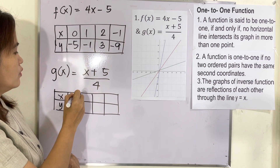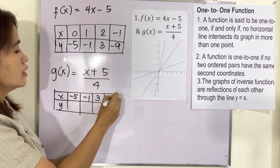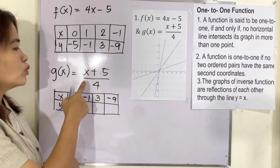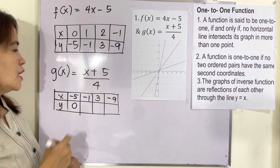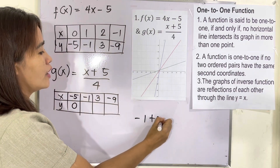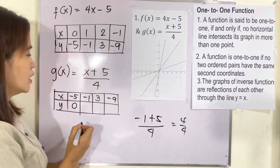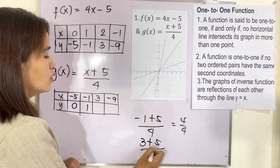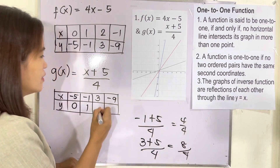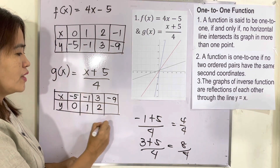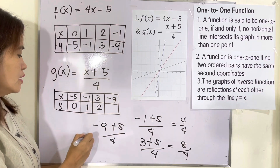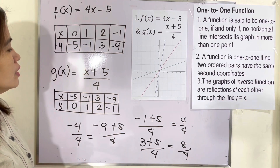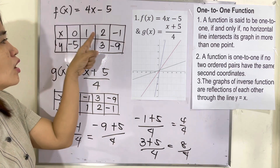Now for g(x) = (x + 5)/4, let us use the y-values −5, −1, 3, and −9 as inputs. If x = −5: (−5 + 5)/4 = 0/4 = 0. If x = −1: (−1 + 5)/4 = 4/4 = 1. If x = 3: (3 + 5)/4 = 8/4 = 2. If x = −9: (−9 + 5)/4 = −4/4 = −1.